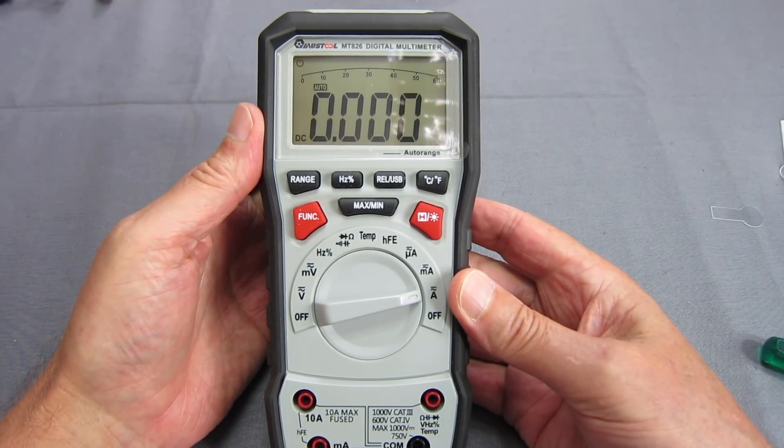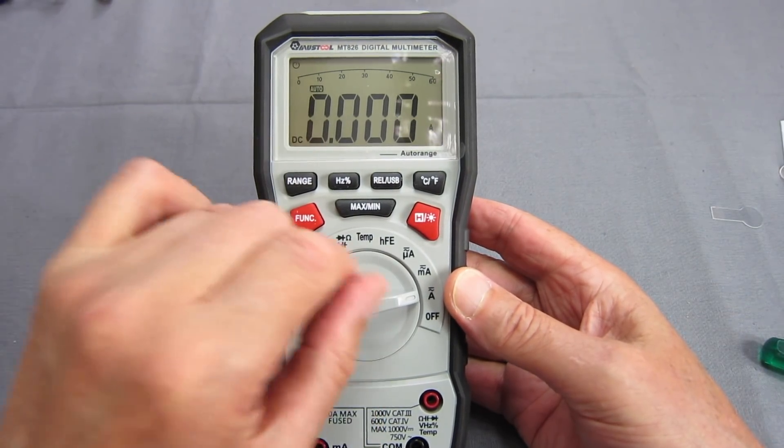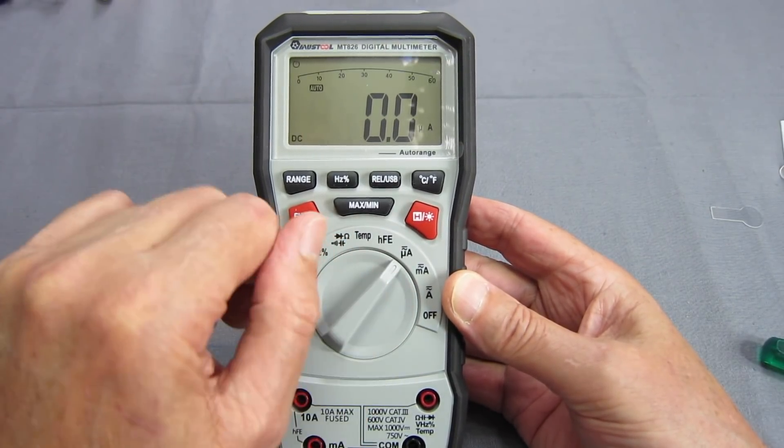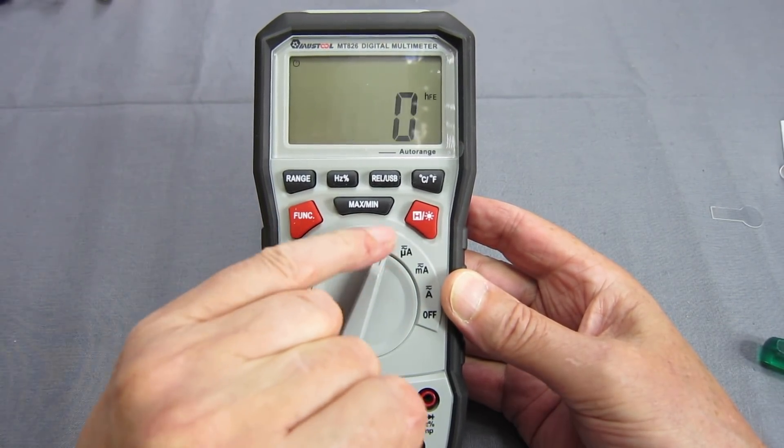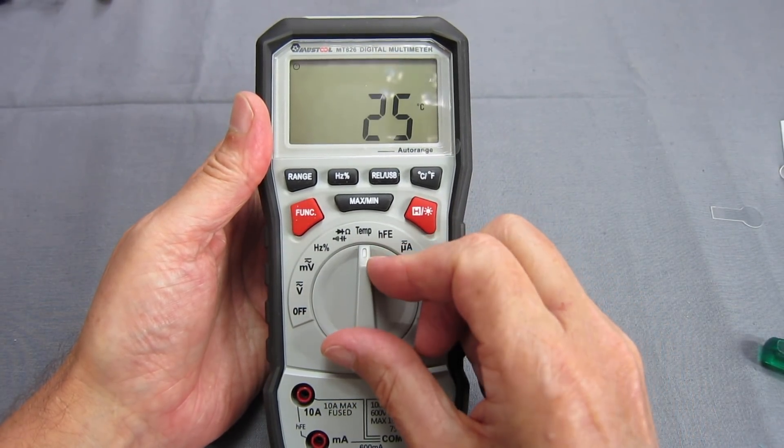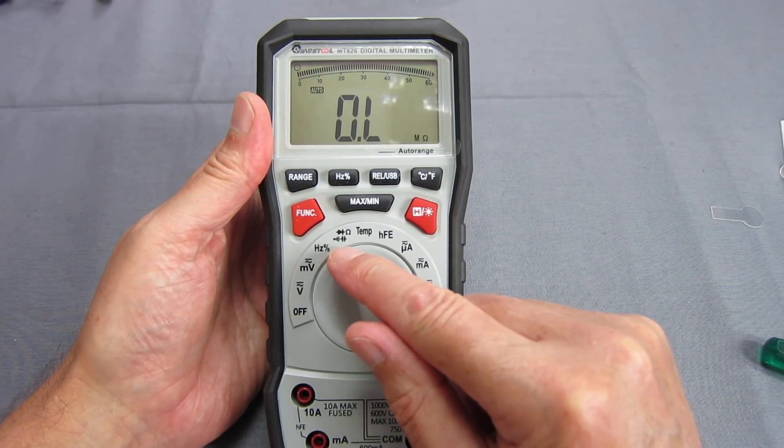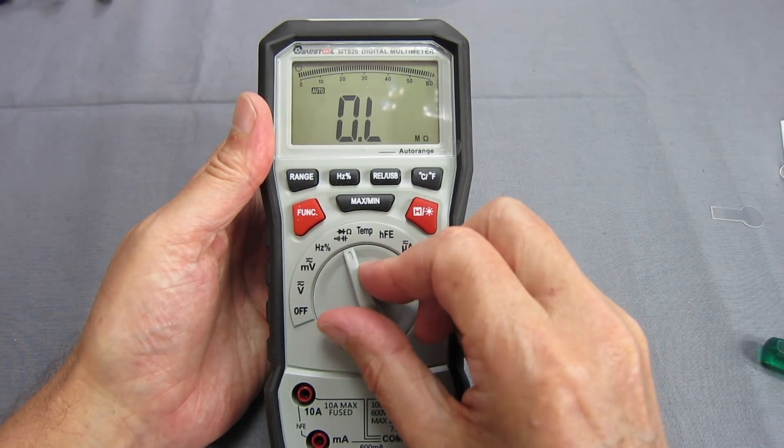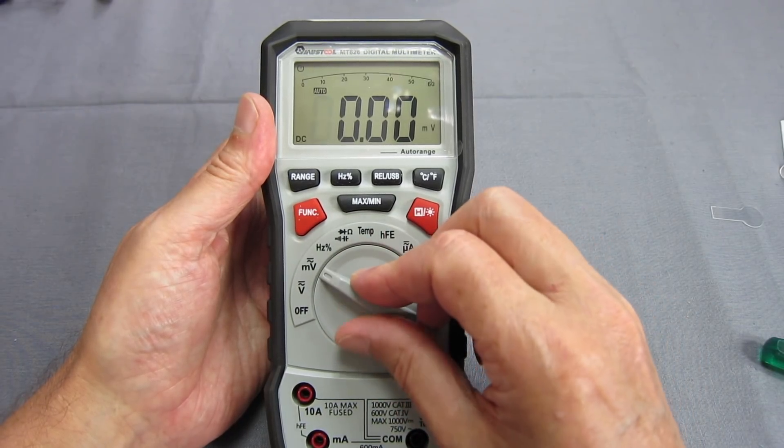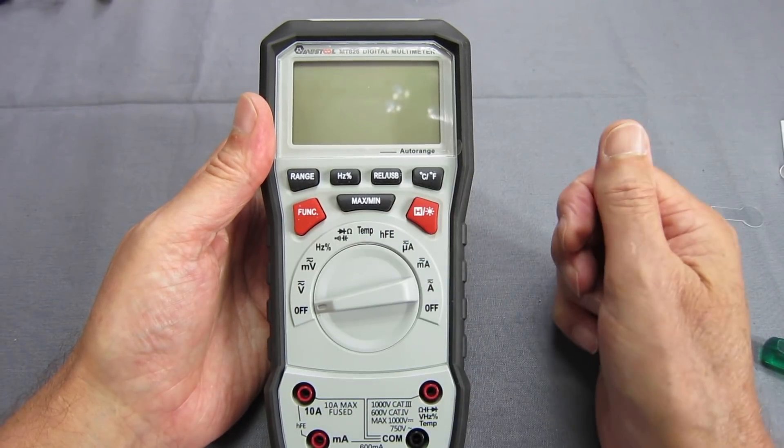Nice little beep. So it's on DC and it's current, amps, milliamps, microamps, microamps. That's a transistor reading of some sort that I don't need. Temperature. This is the continuity and resistance. Ah, hertz, so that's frequency. Millivolts, volts and off again.